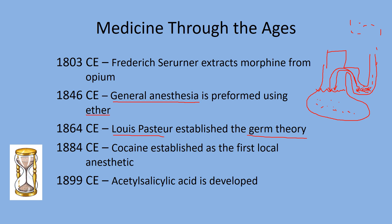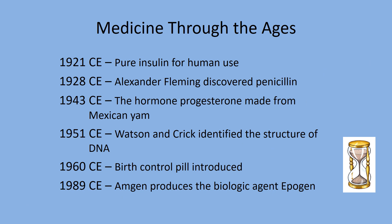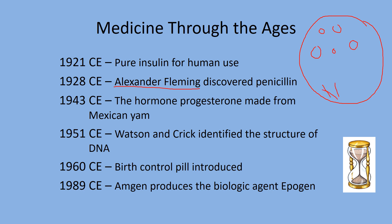In 1888, cocaine was established as the first good local anesthetic, making surgery a lot safer — we could just anesthetize the specific area instead of using general anesthesia. Then we have aspirin, developed right at the turn of the century.